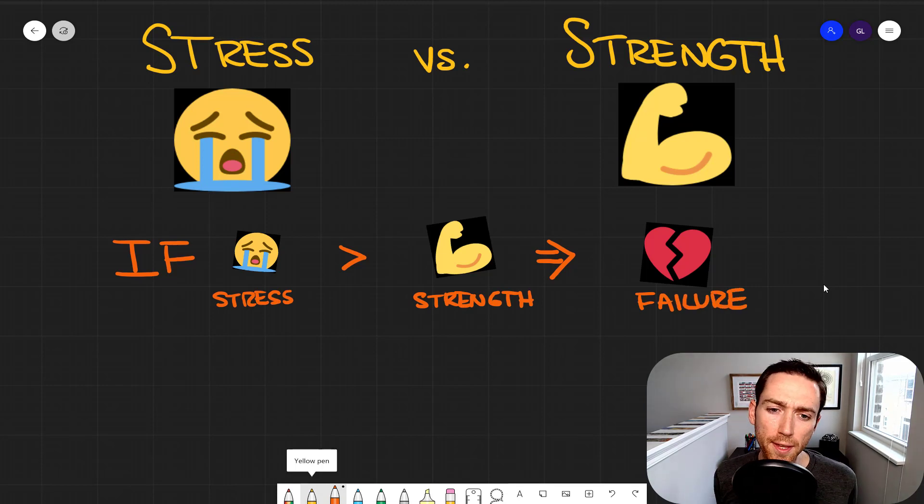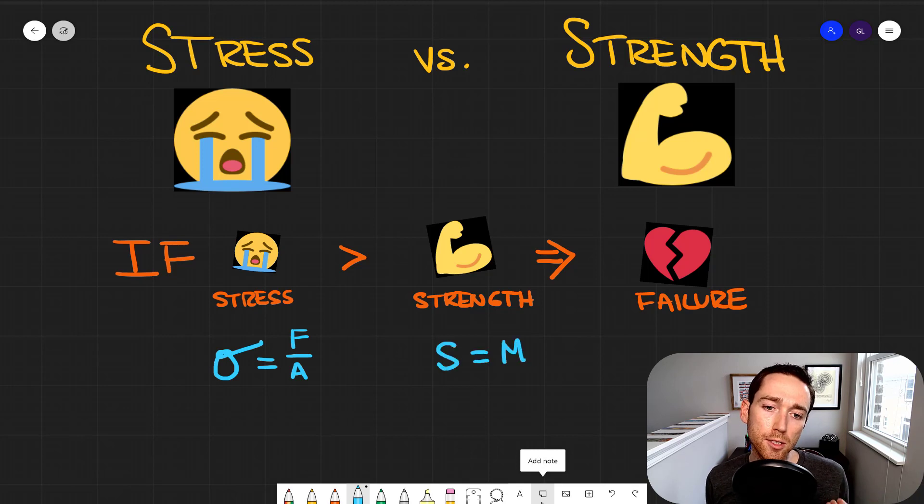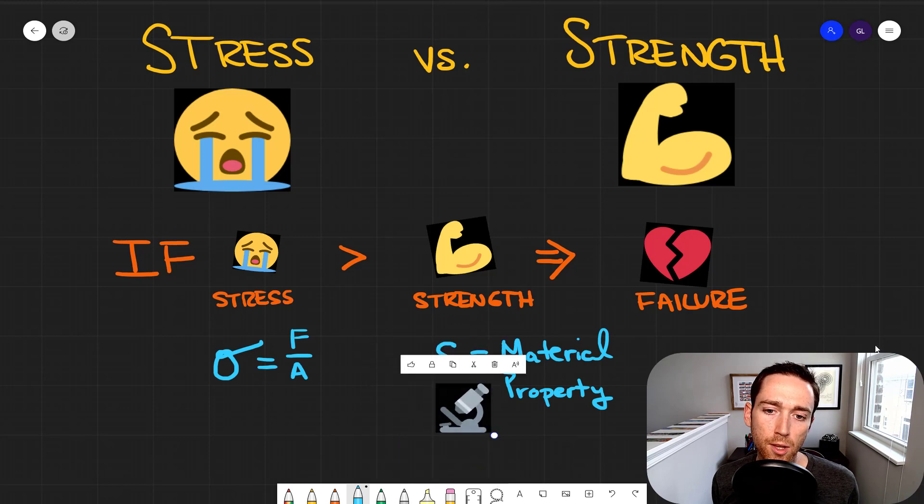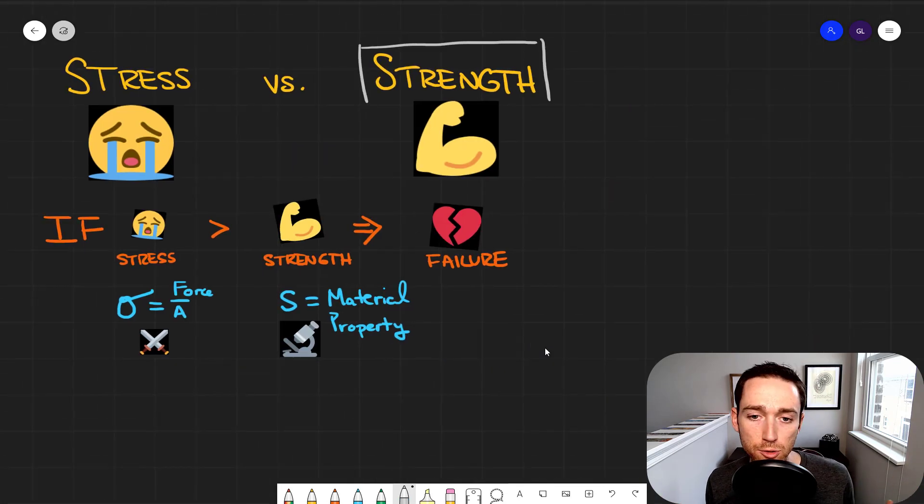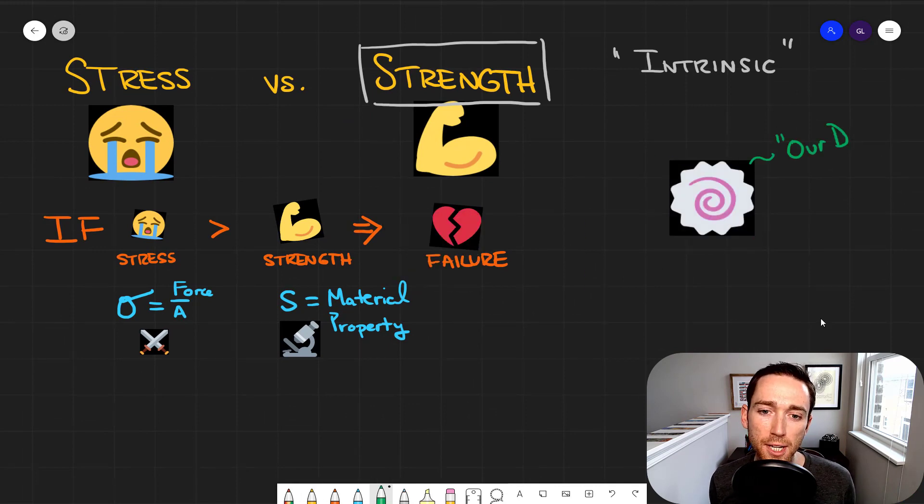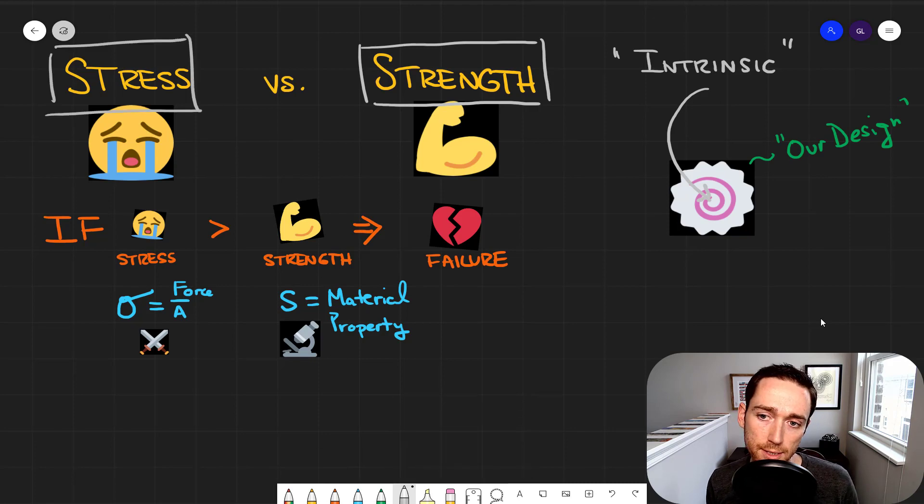When we think about the stress and the force analysis that we do to calculate the stress state inside of the material, we can think about how that's actually caused by external forces. Then Newton's third law tells us those external forces have internal reactions, and those internal reactions are then causing our stress state inside of our part or our design.